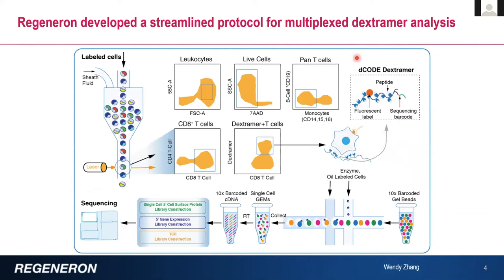We use this concept with the decode dextremers to reform an assay in our own hands, where we take those labeled cells — as in the cartoon diagram of flow sorting — taking our live cells and our CD8s, then any dextremer-positive cells, and putting them into the same 10x single cell sequencing that was just described. Running it through our system to single cell sequence, identify, decode, and deconvolute which dextremers are positive for which cells, and take them for our own analysis.